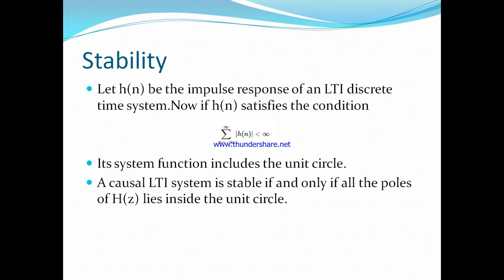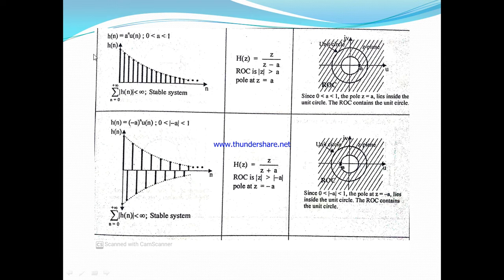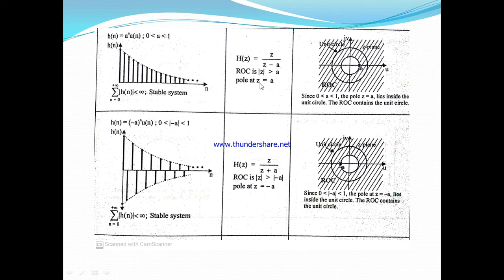Now we look at an example. The sequence h(n) = a^n · u(n), where a is in the range 0 to 1. For this impulse response, the Z-transform is H(z) = z / (z − a). The ROC is |z| > a. To check stability we need to find the poles, so we set the denominator z − a = 0, giving pole z = a.